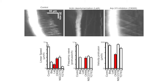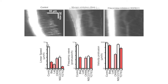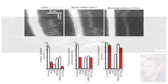Accordingly, fin formation and cell motility were suppressed by actin depolymerizing agents or by inhibitors of the branched actin-nucleating ARP2-3 complex. Reducing cell contractility meanwhile, by inhibiting myosin or its upstream activator rho kinase, resulted in the formation of fewer but larger fins.